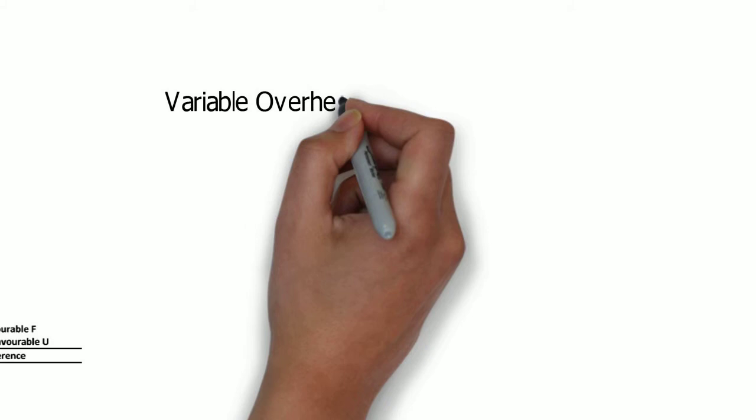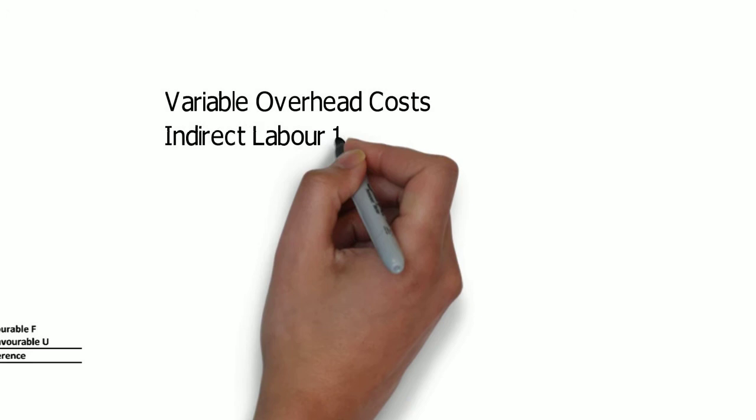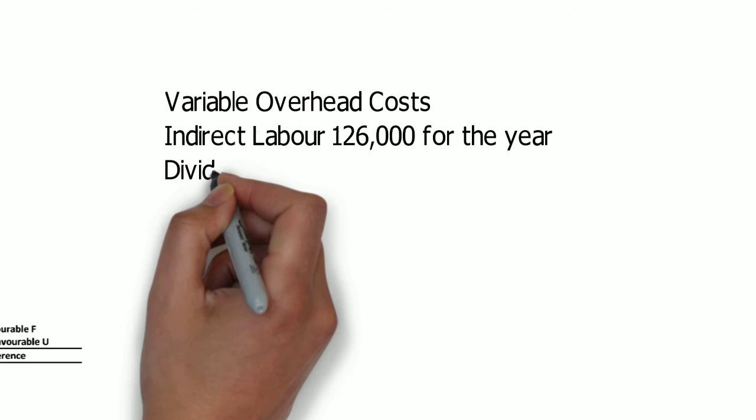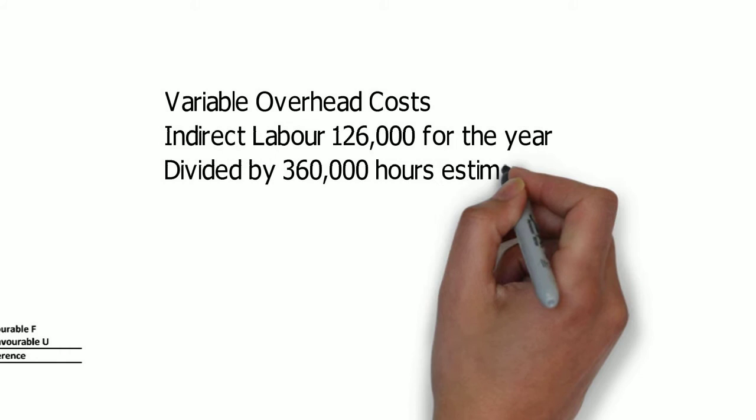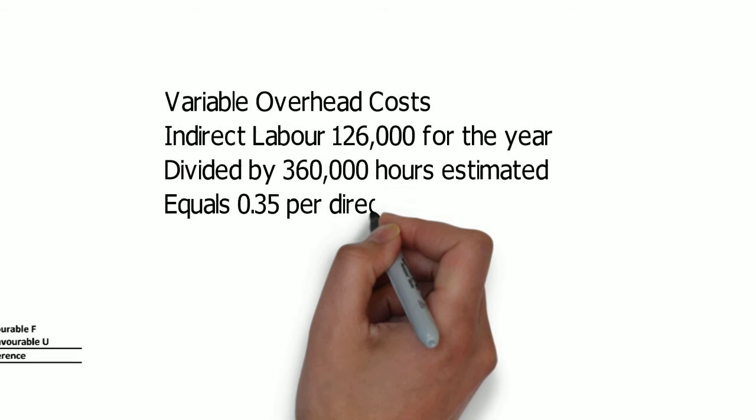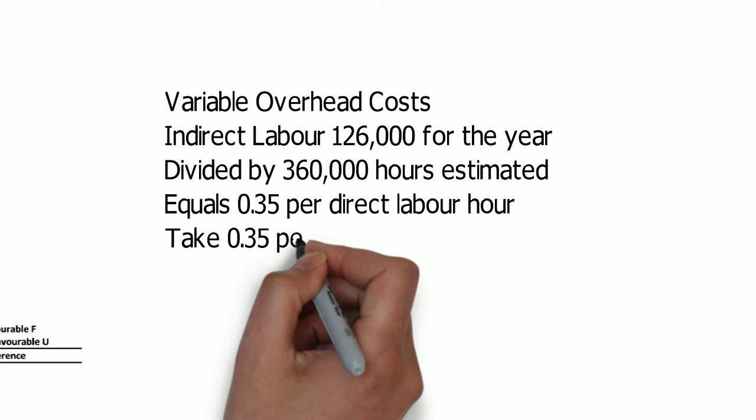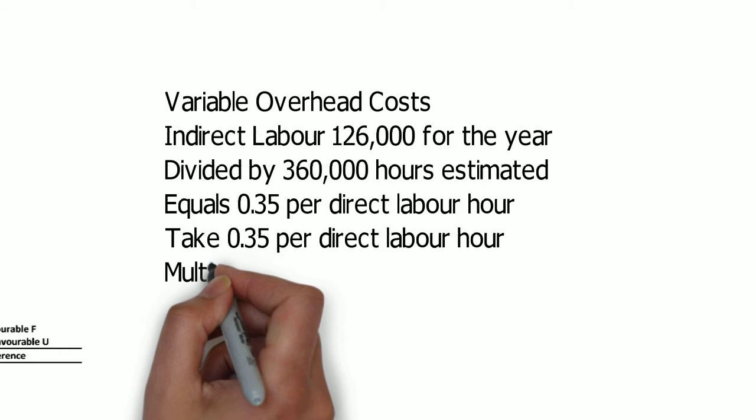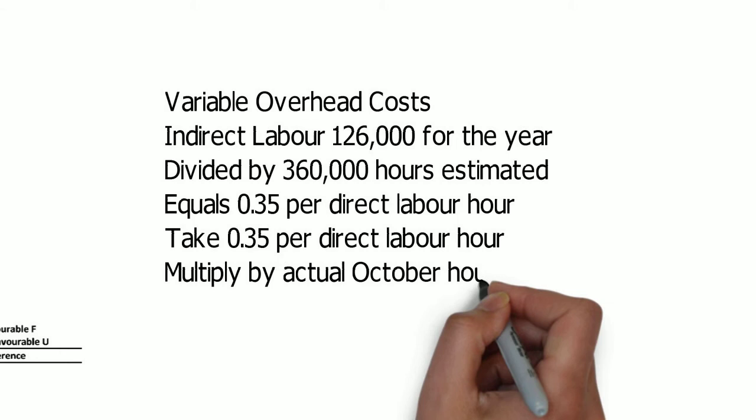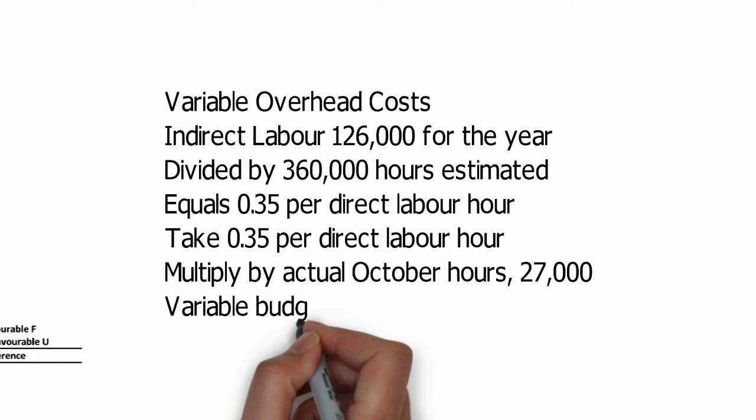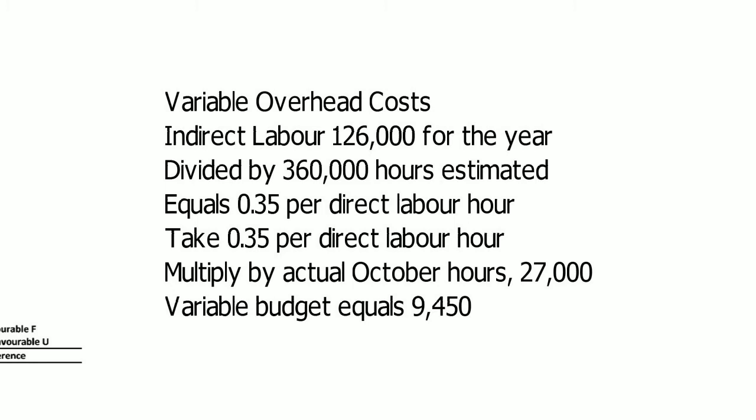And what we're trying to do here is we're trying to say, okay, we go back to the original concept of when the budget was developed, which for problem 1150B was that indirect labor, for example, as a variable overhead cost would be $126,000 for the year. And really importantly, that was based on an assumption of 360,000 direct labor hours. So that $126,000 divided by the 360,000 direct labor hours gives you a $0.35 per direct labor hour assumption that was an important building block in building that budget.